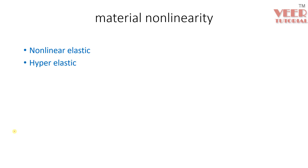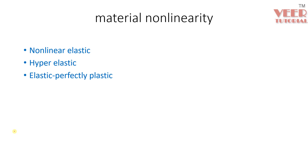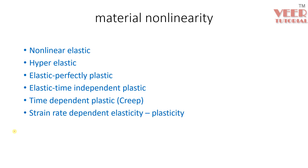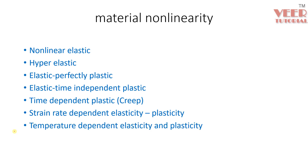In HyperMesh we have nonlinear elastic material, hyperelastic material, elastic perfectly plastic material, elastic time-independent plastic material, time-dependent plastic material for creep testing, and strain-dependent, temperature-dependent elasticity and plasticity. Out of these, nonlinear elastic and elastoplastic materials are generally used for metals, hyperelastic is used for rubber components, and others depend on specific requirements.